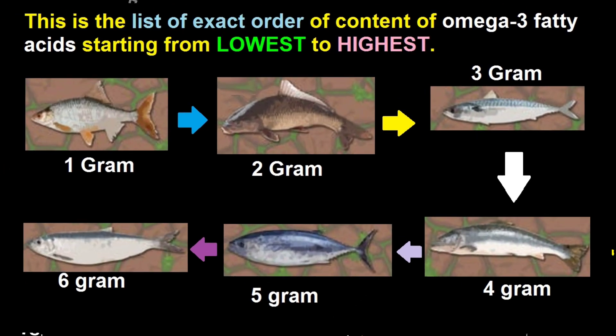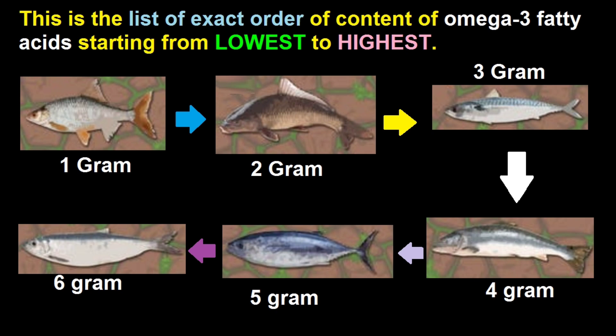The easiest way is to just look at this image — this whole image. In this image I have listed the exact order of fish with respect to their omega-3 fatty acid content. Although the order of fish with respect to their omega-3 fatty acid content is exact here in this image, the numerical content — 1g, 2g, 3g — may be different. It is just for you to remember the order of the omega-3 fatty acid content, so don't take those numbers seriously.